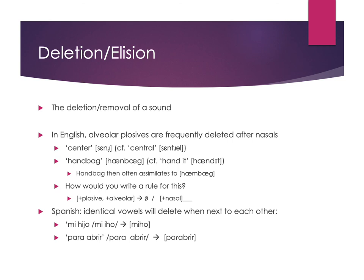Another Spanish example: 'para abrir' drops that first A and you hear 'par' abrir'. It's much quicker and easier to say 'par' abrir' than 'para abrir' and pause between the identical vowels. So deletion gives us further examples of the different kinds of phonological processes at work.